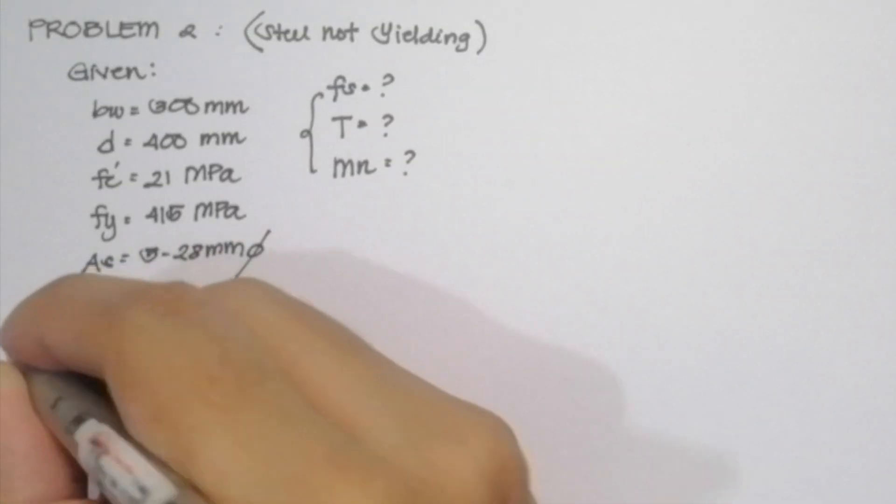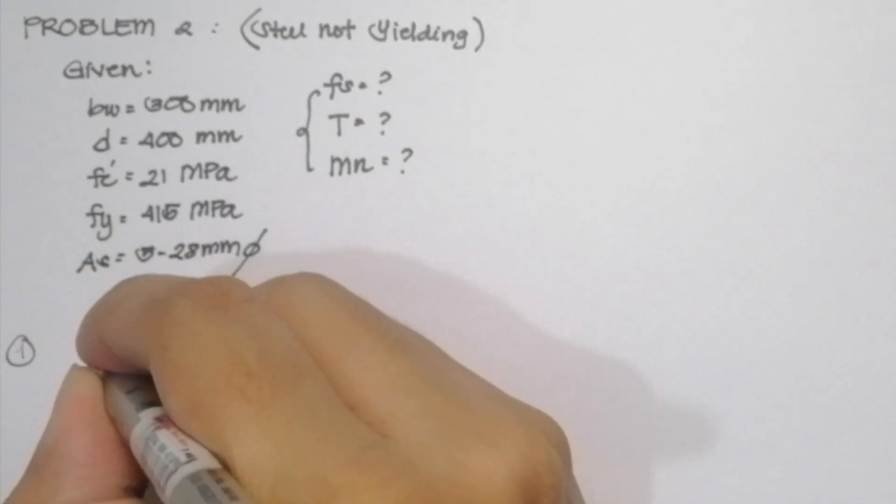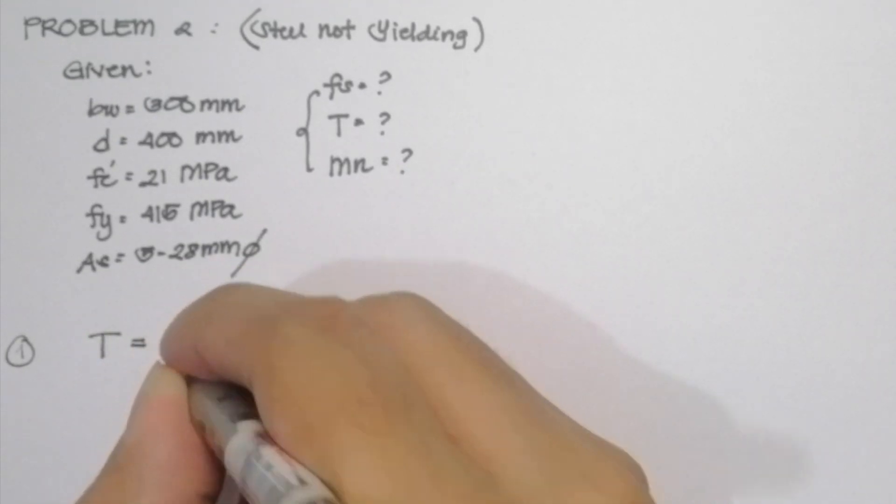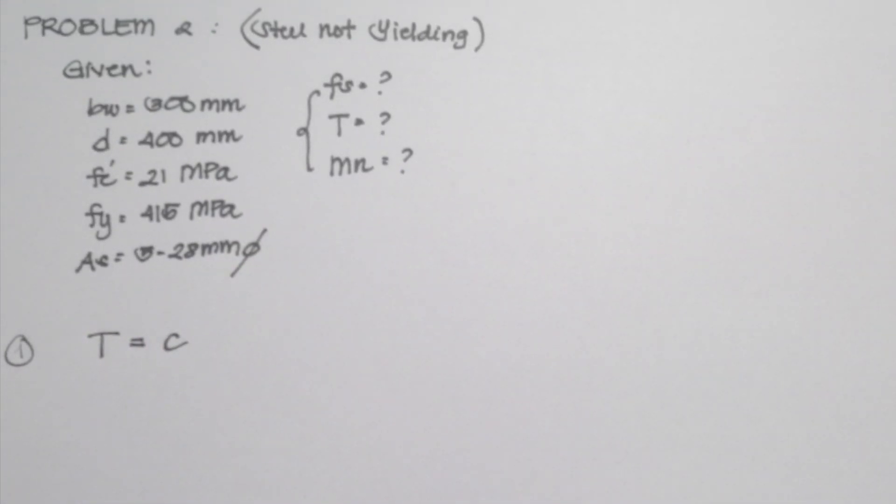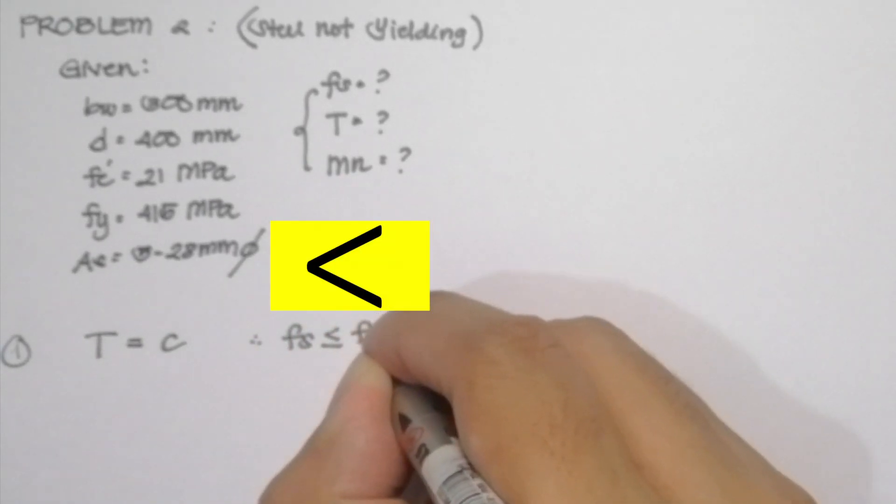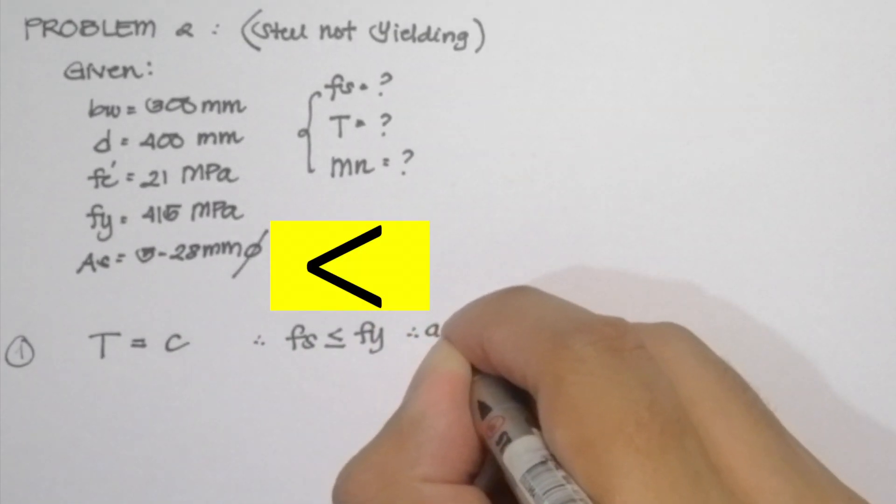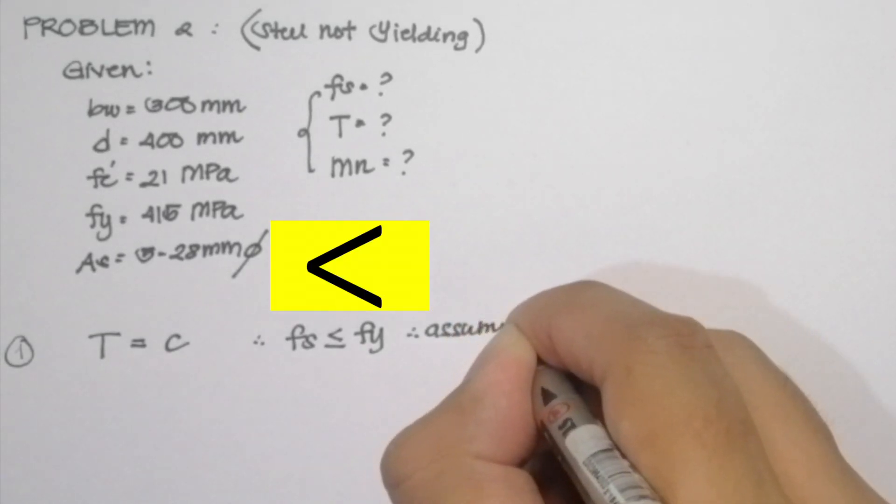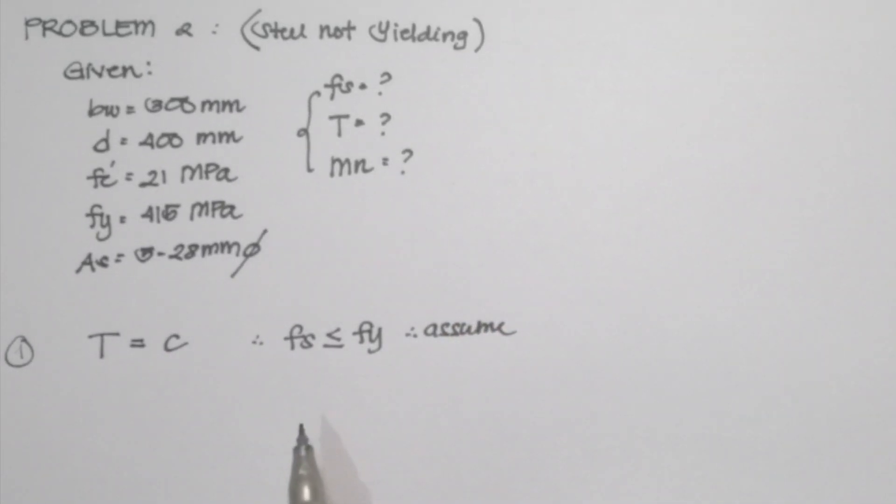So the first step is that we equate T to C in which the tensile force should be equal to the compressive force in the beam. And also, we are going to assume that our Fs is less than Fy. So pardon me in my video, it should be Fs less than Fy, not less than or equal to Fy.